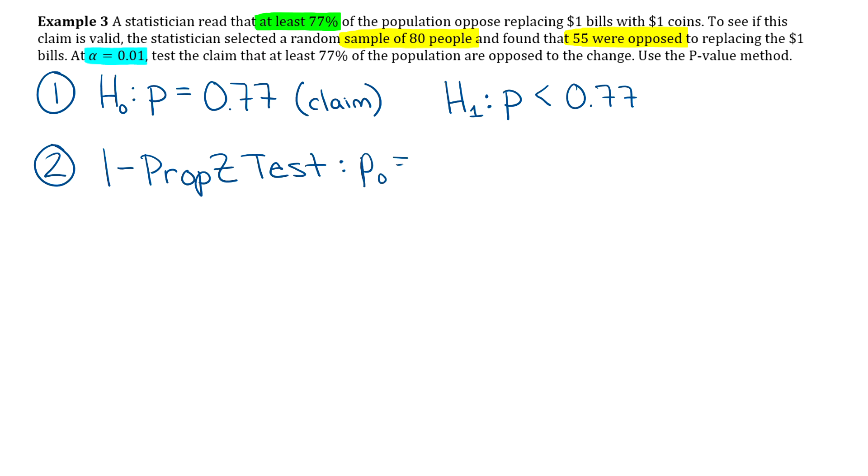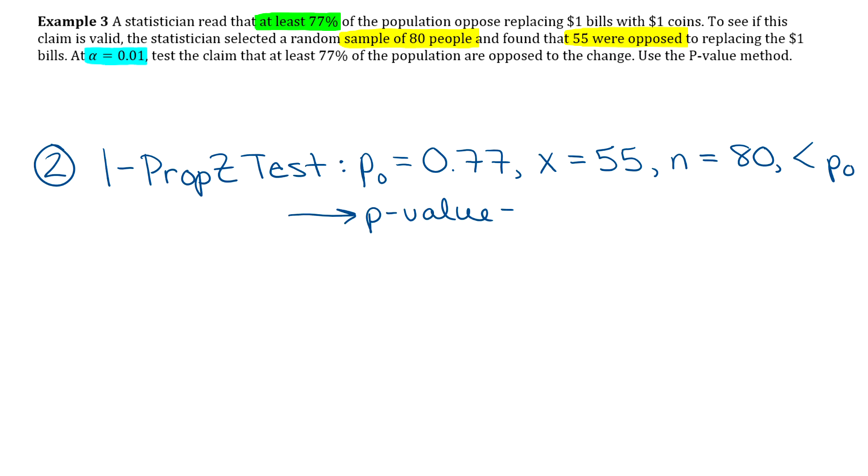So p naught is the 0.77. X is the number of people in the sample who favor replacing $1 bills. So that's the 55. n is the total number of people in the sample, so 80. And then make sure that you select the sign that's in the alternative. So you want to select less than p naught. Click calculate. p value always goes to four decimal places. So you get 0.0398.